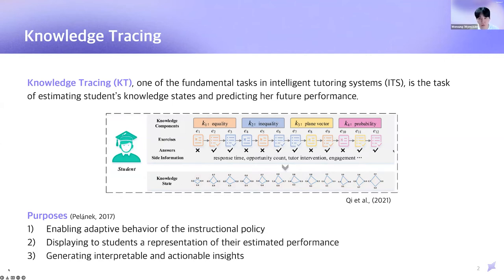The main purposes of knowledge tracing are the following. First, enabling adaptive behavior of the instructional policy. Based on the estimated knowledge states, we can utilize it to recommend personalized learning materials and provide adaptive learning methods tailored to individual students. And second, displaying to students a representation of their estimated performance. This is able to promote metacognitive abilities of learners and also increase learner trust in the system. Third, through the knowledge tracing task, we can derive some useful insights that are interpretable and actionable for both students and tutors.